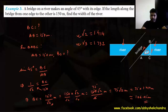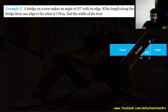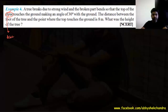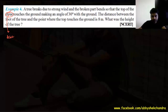Let's move on to the next question. Question 4: a tree breaks due to strong wind and the broken part bends so that the top of the tree touches the ground making an angle of 30 degrees with the ground. Let's draw the figure — there is a tree, it breaks due to strong wind.